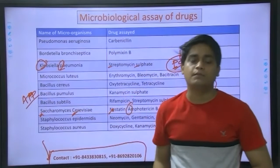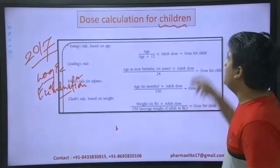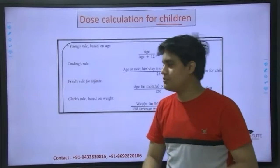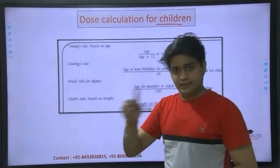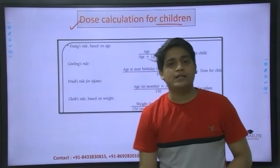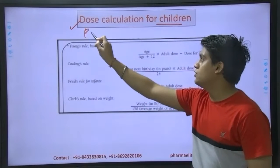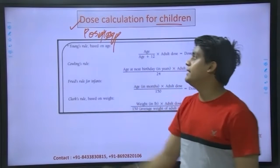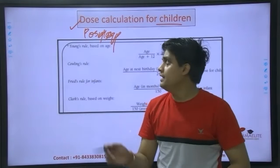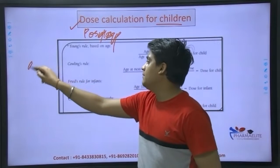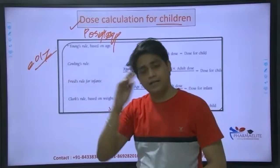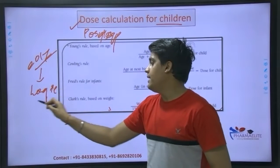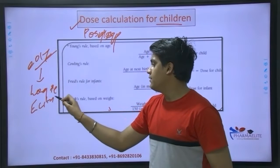Moving further to the next part - those calculations for children, which you might also know as posology, which you probably studied in first, second, or third semester depending on your syllabus and university - diploma or non-diploma. Questions from this came in 2017. These questions are quite logic-based and can be solved by the elimination method.